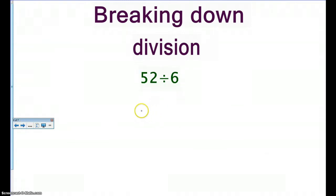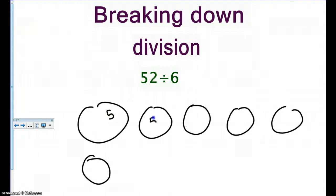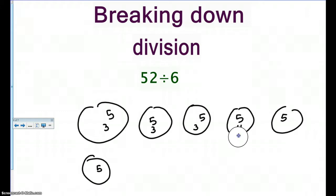Let's move on to our last problem: fifty-two divided by six. I drew six circles. I should start counting by fives: five, ten, fifteen, twenty, twenty-five, thirty. Then I'm going to start adding threes: thirty-three, thirty-six, thirty-nine — I want you to count with me — forty-two, forty-five, forty-eight. Now I'm at forty-eight.